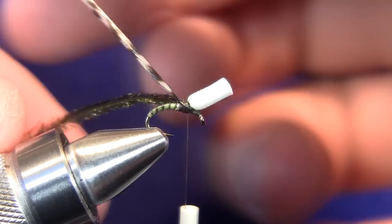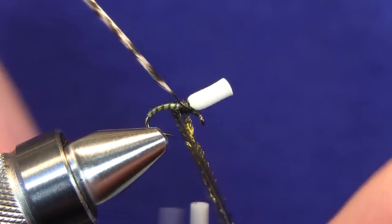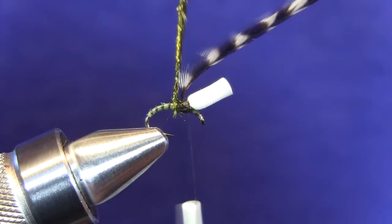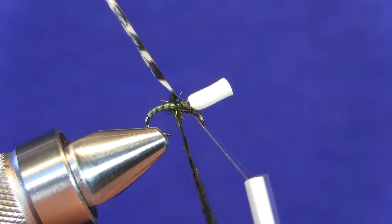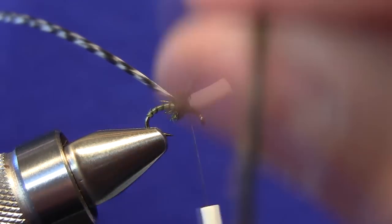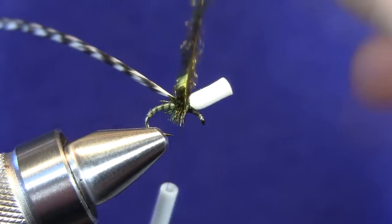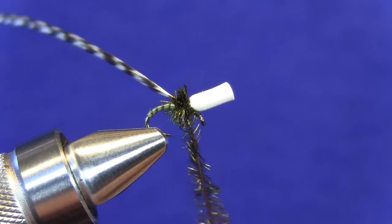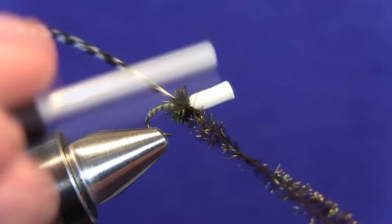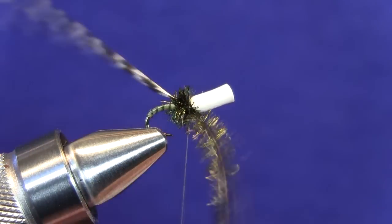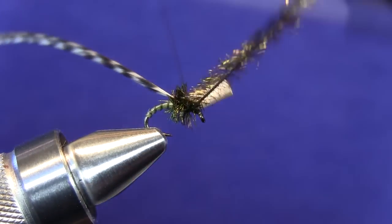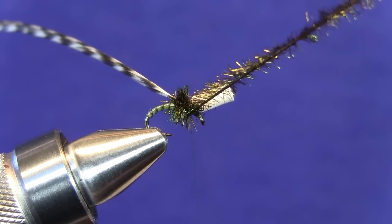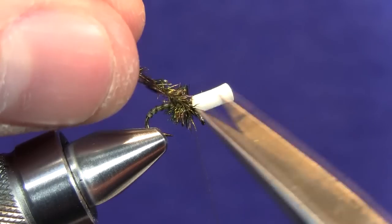Just tie that in by the stem, and we're going to make one peacock wrap behind the hackle, and then we're going to make forward wraps in front all the way up to that white parachute post. The goal here is just to cover that black thread. Once we've taken care of that, we're just going to make a few securing wraps behind that peacock just to bind it down, usually about three to four should be fine, and we'll clip out the butt section with our scissor tips here.